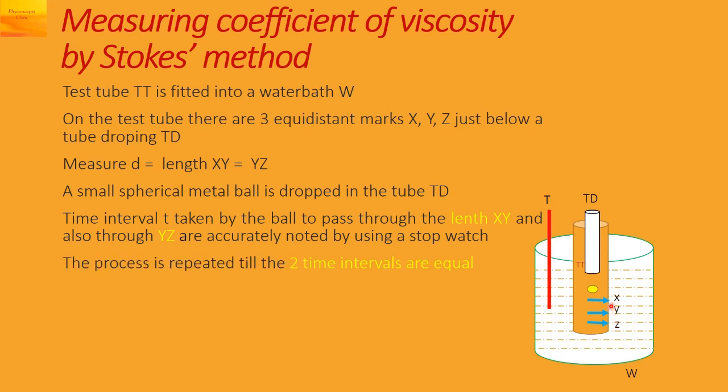The process is repeated till the time intervals, both these time intervals between X-Y and Y-Z, become equal. We will note the temperature of the liquid also, as the coefficient of viscosity depends upon temperature. So when both times become equal we can say that it has attained the constant velocity called terminal velocity.